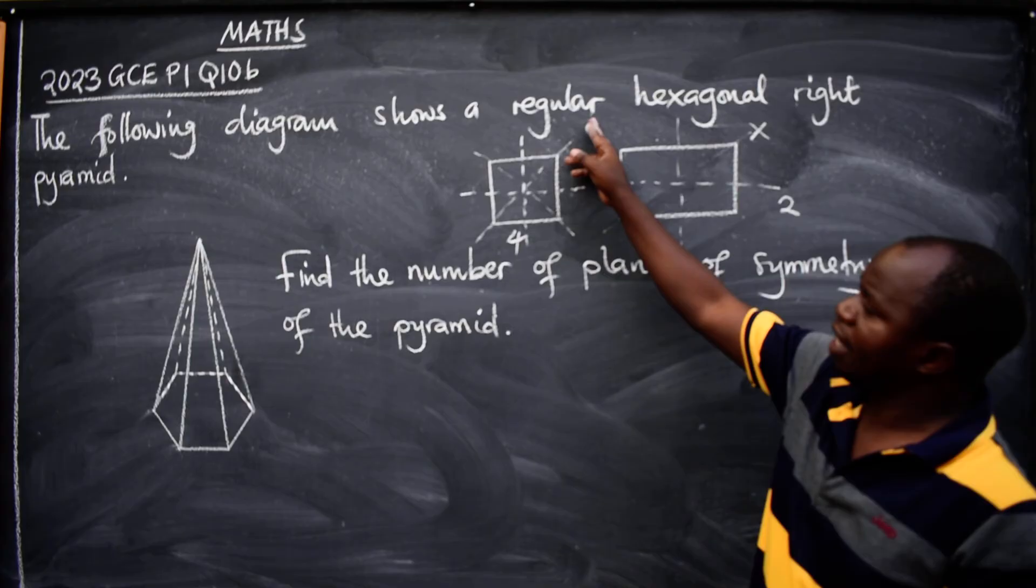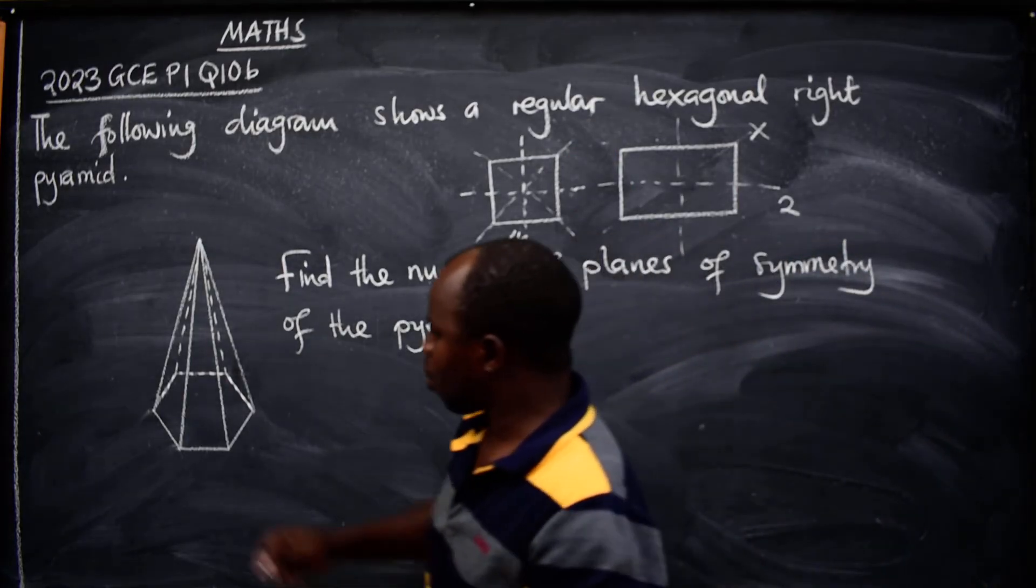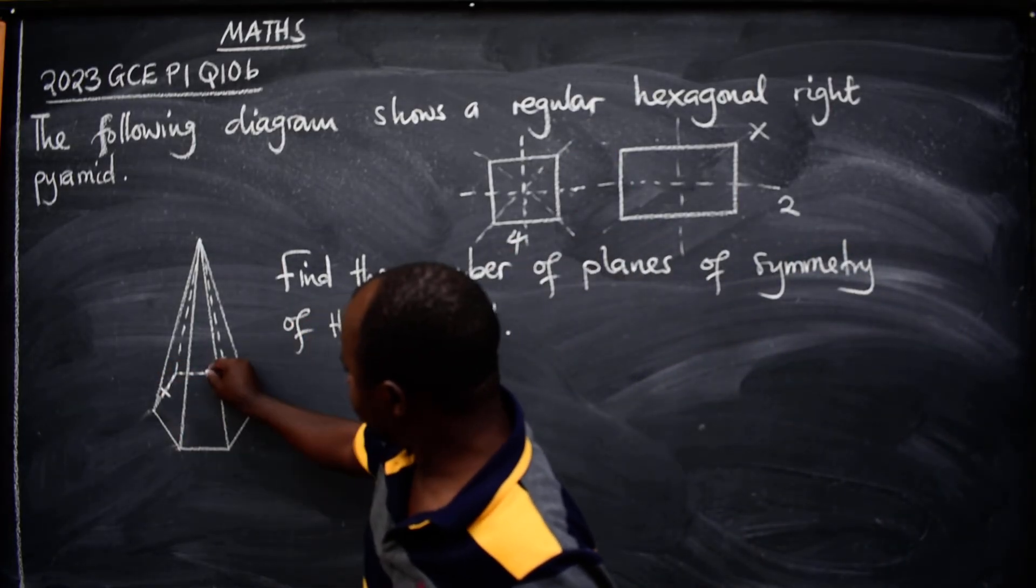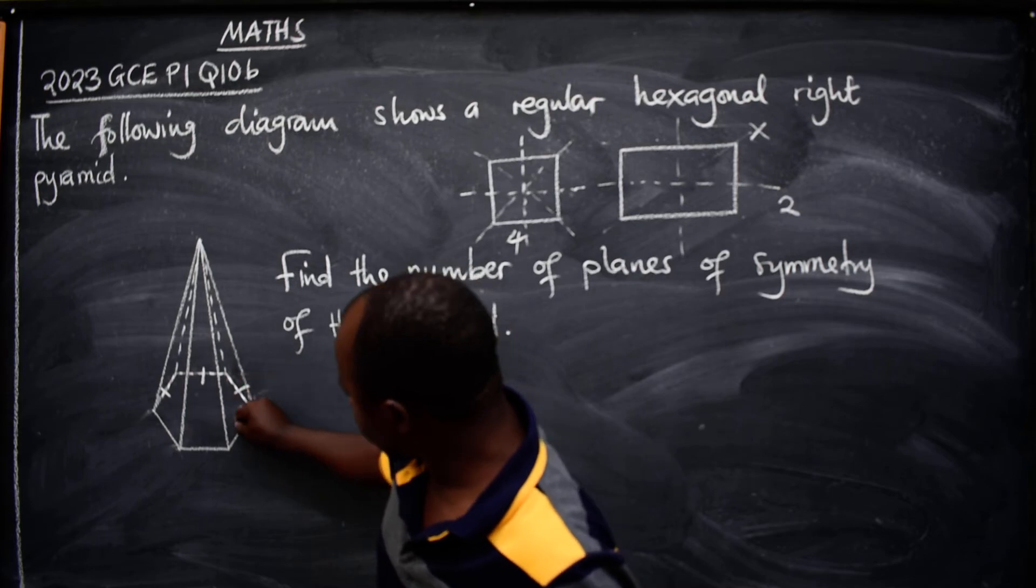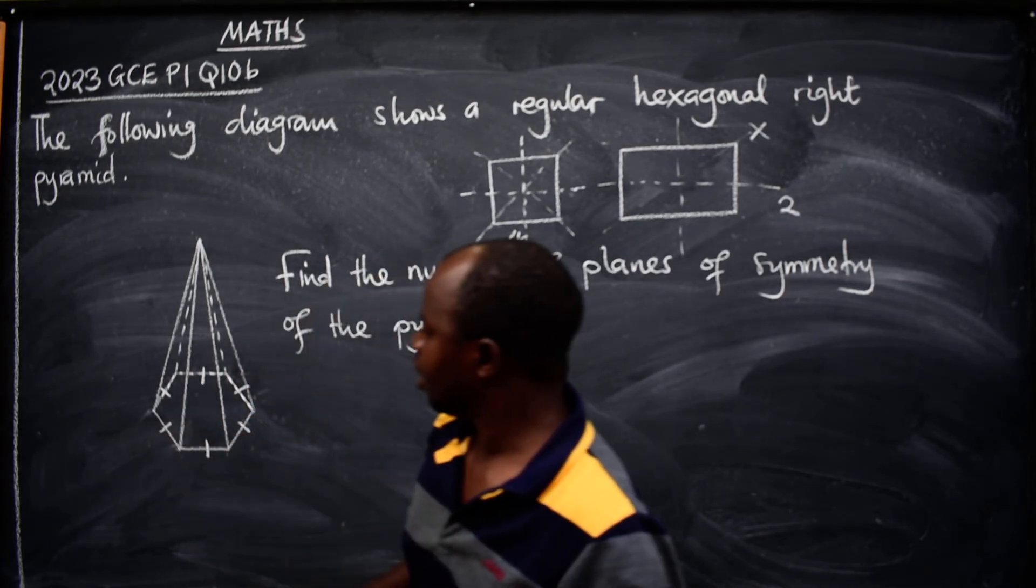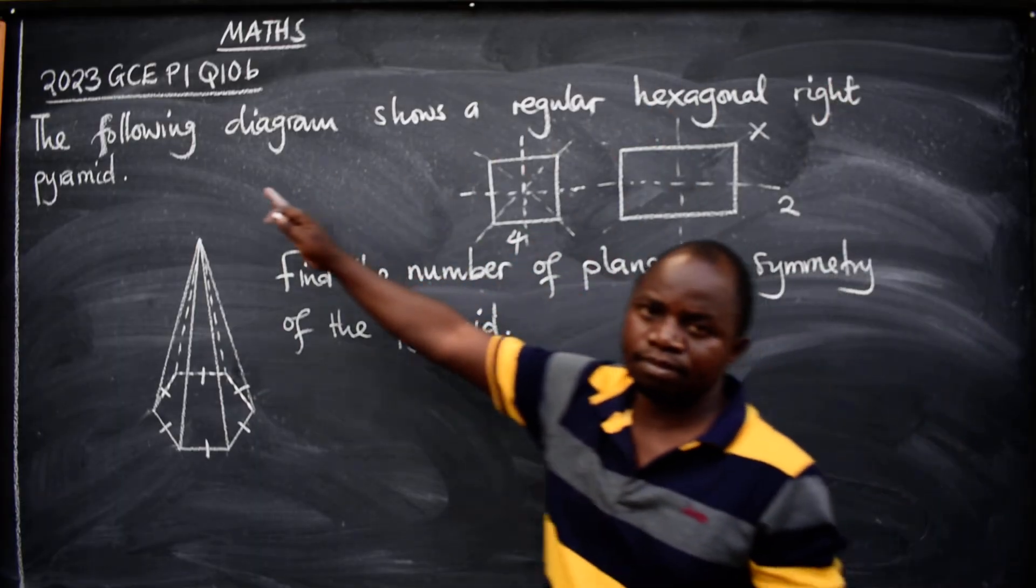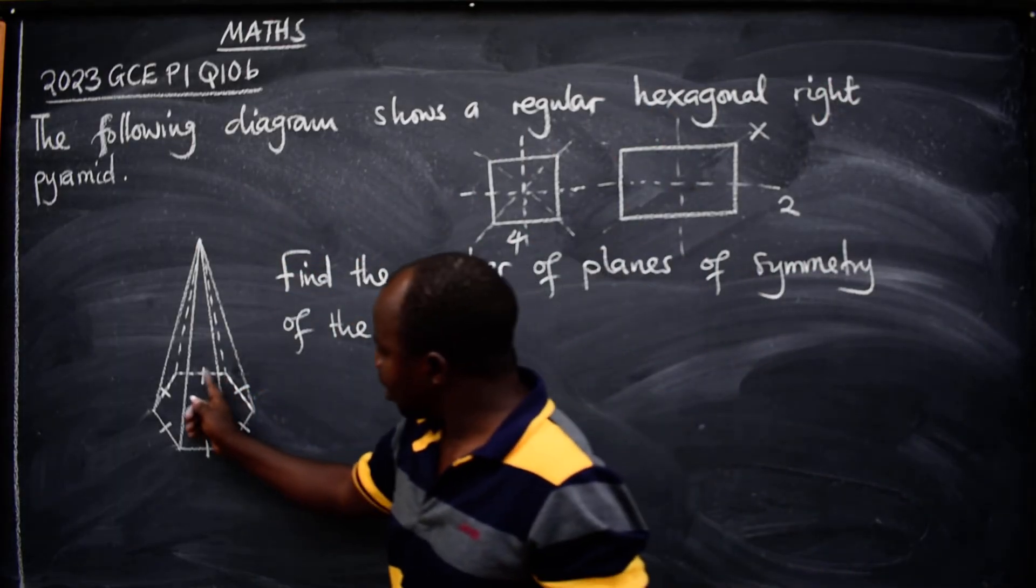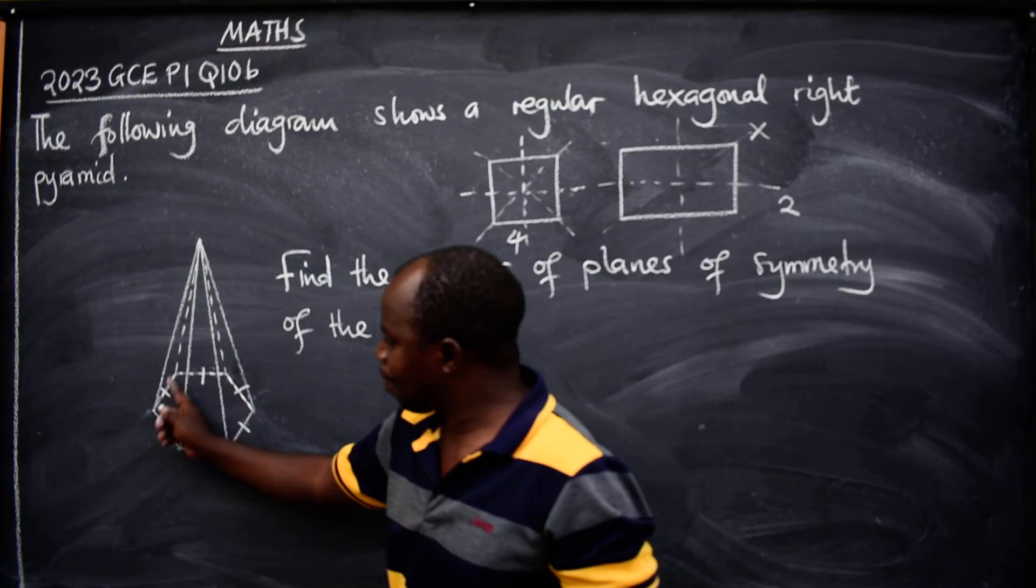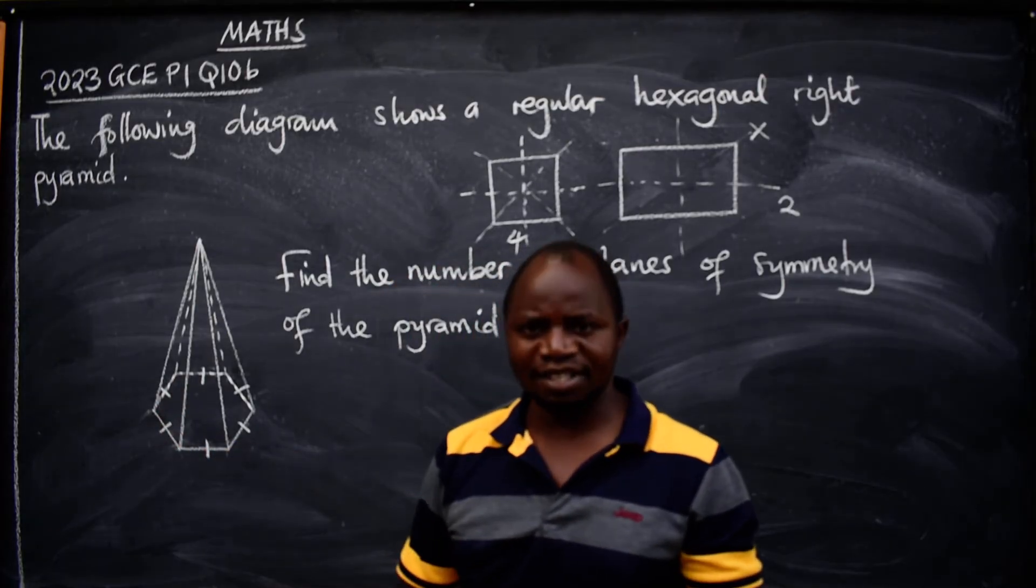The base says regular, it means same or equal. So this is equal to this, is equal to this, equal to that, equal to that, equal to that. Okay, so regular hexagonal right pyramid. So the base is a polygon with how many sides?